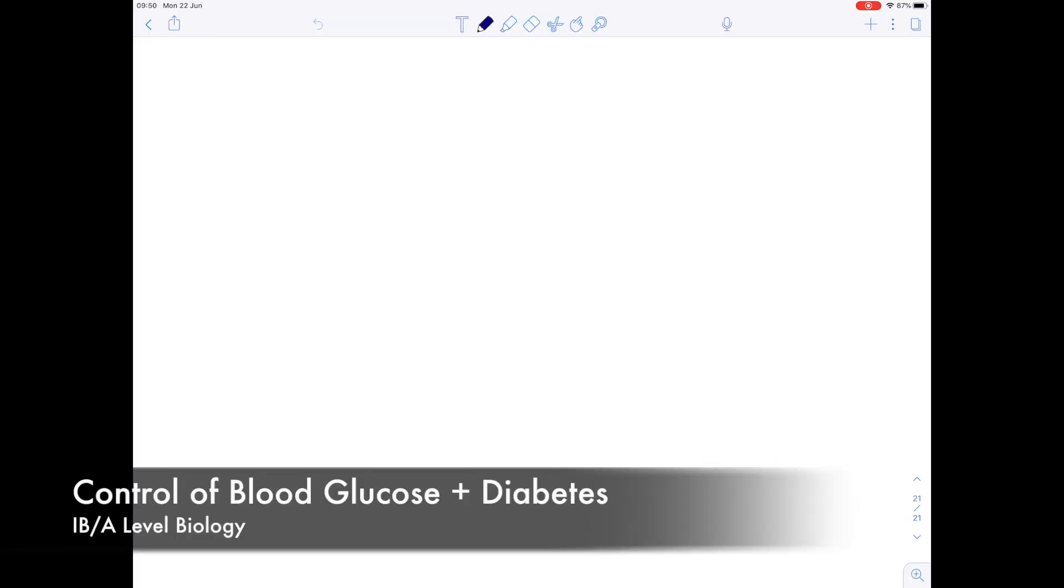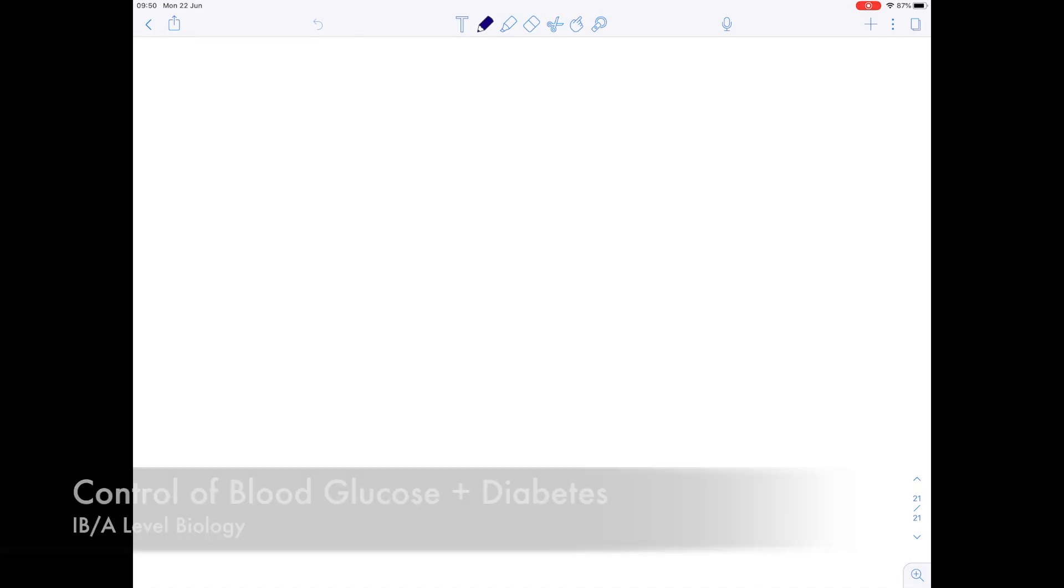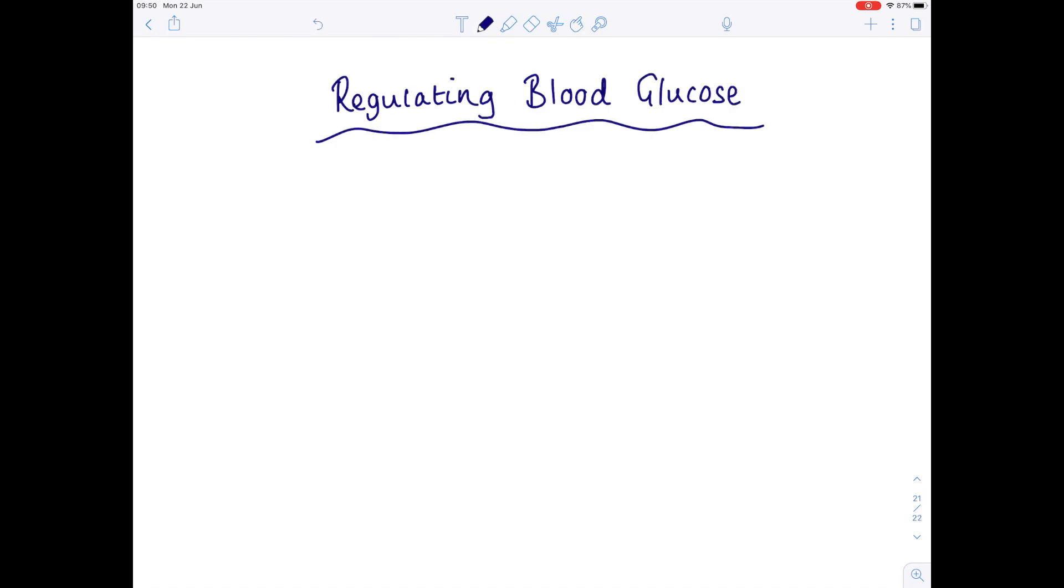In this A-level IB biology video we're going to be looking at how you regulate blood glucose and what happens when that goes wrong, and really that's talking about diabetes. So regulating blood glucose, now blood glucose has to sit between 4 and 8 millimoles per dm cubed of blood and there are two mechanisms in place which help to either lower blood glucose or increase blood glucose levels.